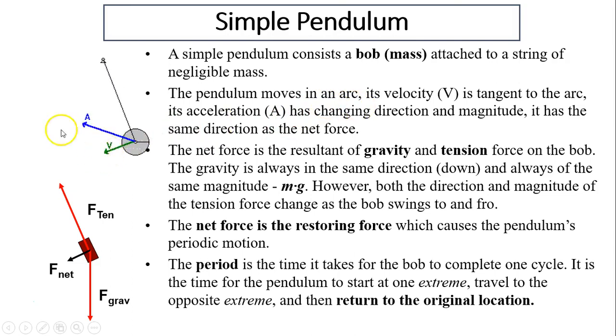The pendulum moves in an arc, as you can see. Its velocity is the green arrow that is always tangent to this arc. Its acceleration is this blue arrow that has changing direction and a changing magnitude. This acceleration is always in the same direction as the net force.